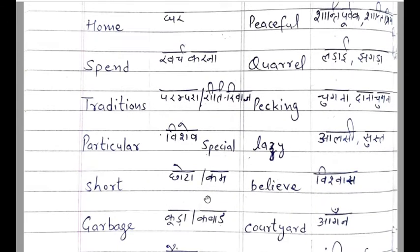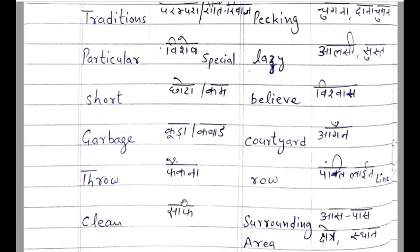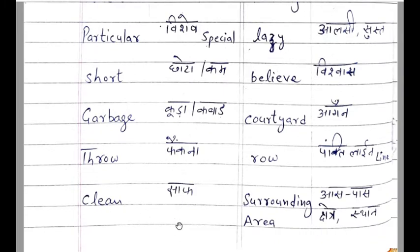Garbage means कूड़ा, कबाड़, जो waste होता है. Throw means फेंकना. Clean means साफ करना, साफ.